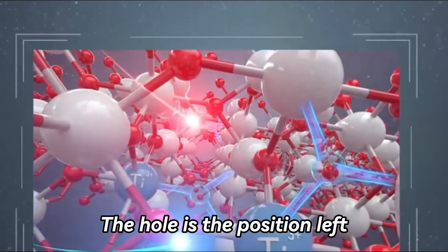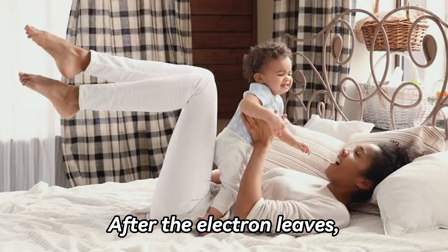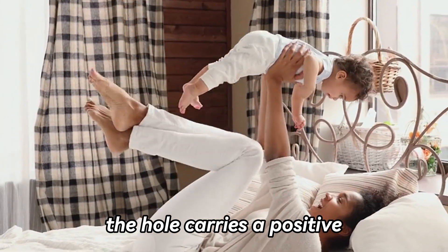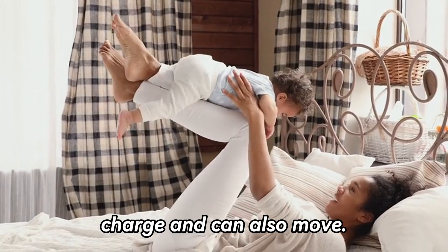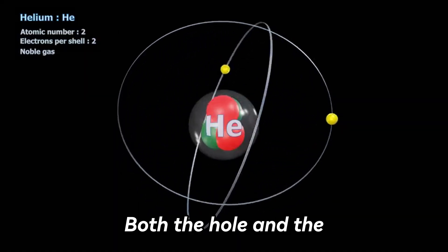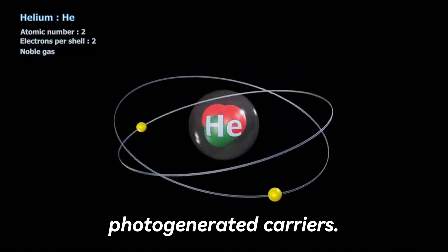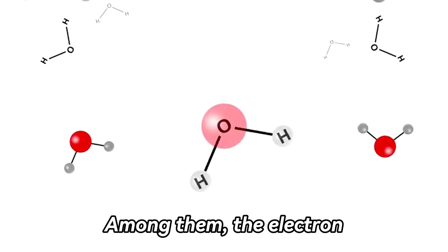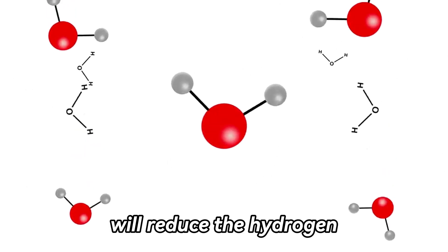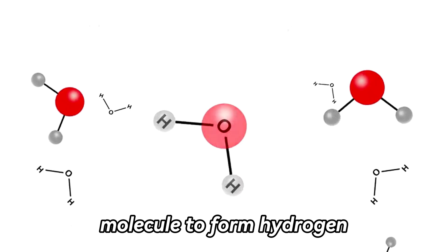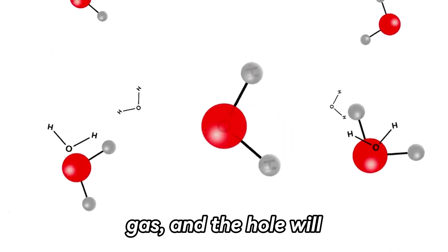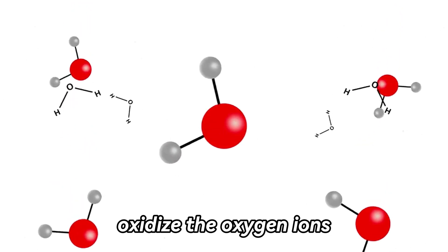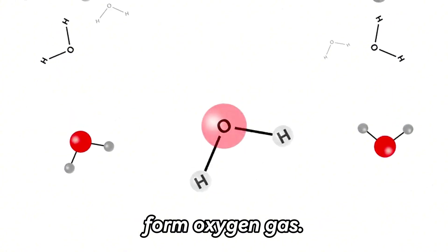The hole is the position left by the original electron. After the electron leaves, the hole carries a positive charge and can also move. Both the hole and the electron here are called photogenerated carriers. Among them, the electron will reduce the hydrogen ions in the water molecule to form hydrogen gas, and the hole will oxidize the oxygen ions in the water molecule to form oxygen gas.